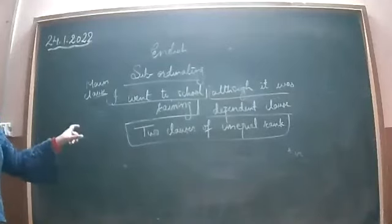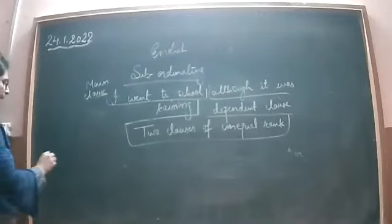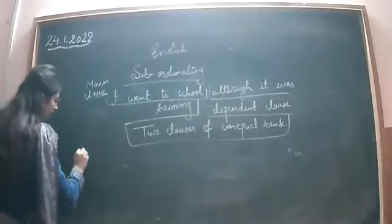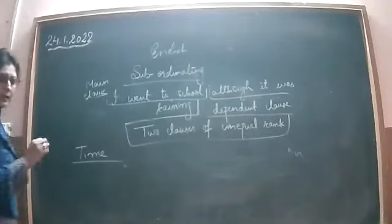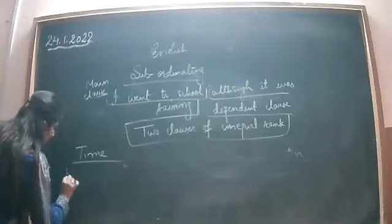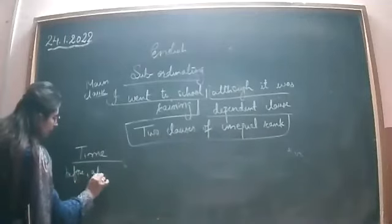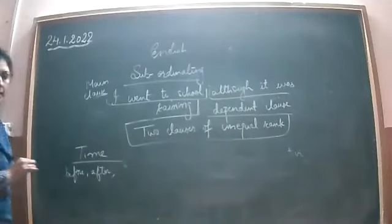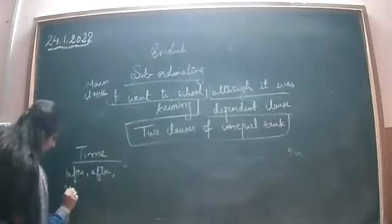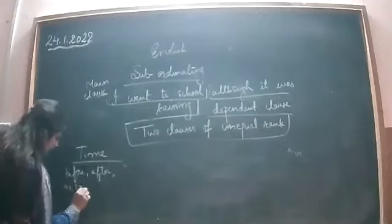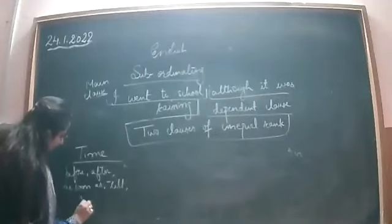First are subordinating conjunctions of time. These tell us about time — for example: before, after, as soon as, till, while.